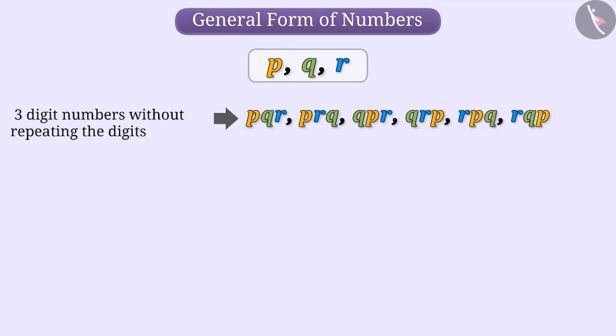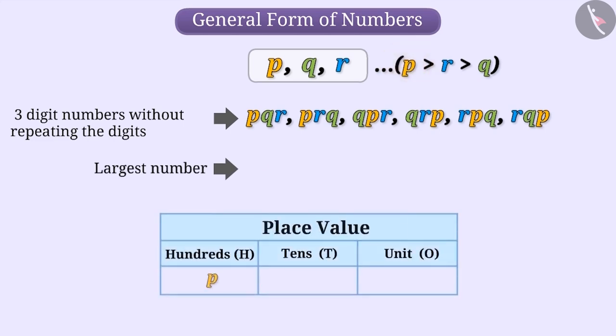Suppose these digits are such that P is greater than R greater than Q. Then what will be the largest number? Since P is the largest digit, it must be in the hundreds place. R is larger than the remaining Q and so it must be in the tens place. And the remaining digit Q must be in the units place. In this way, PRQ will be the largest number made up of the digits PRQ.